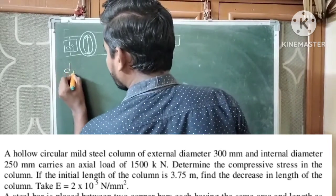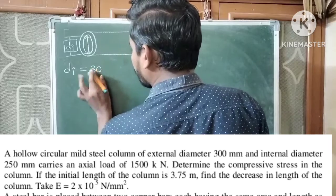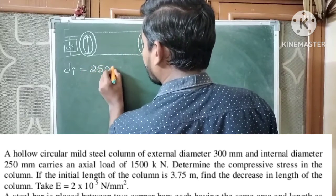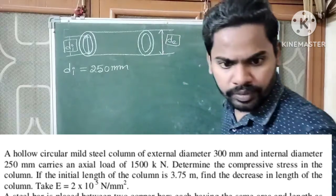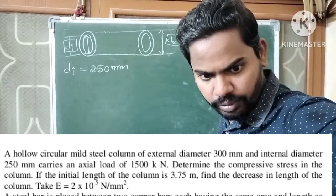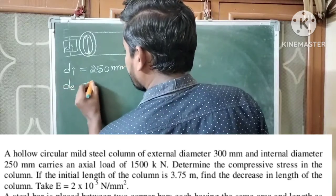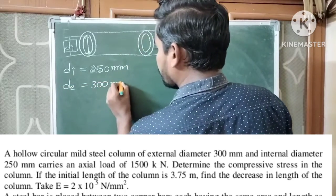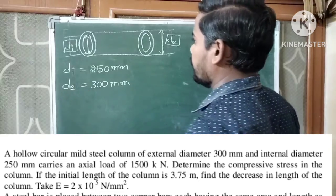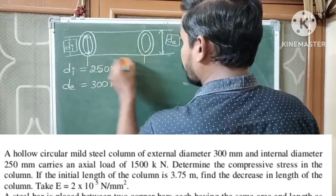Internal diameter D_I is 250 mm and external diameter D_E is 300 mm. The initial length of the column is also given as 3.75 meters.